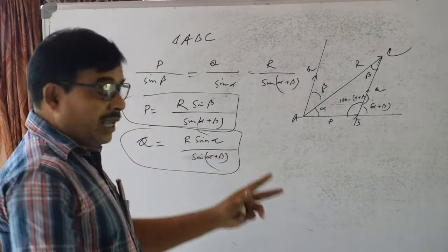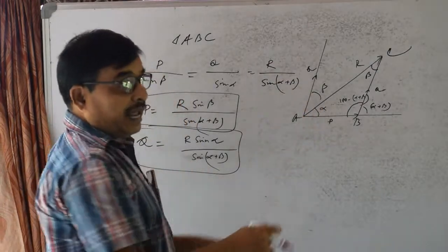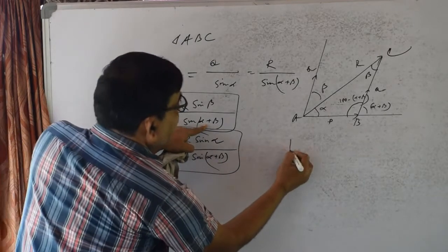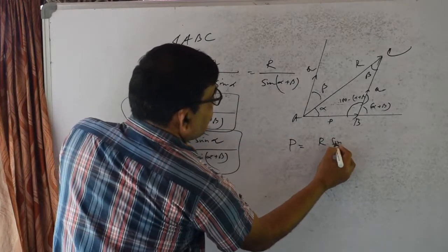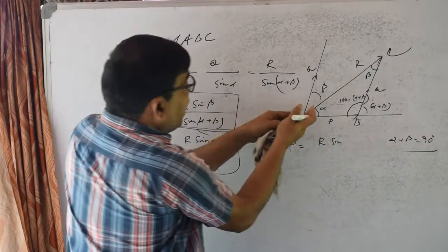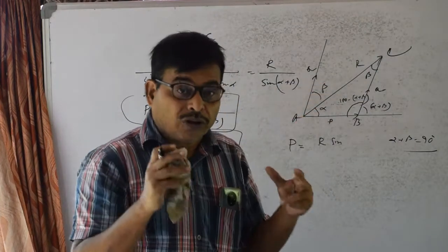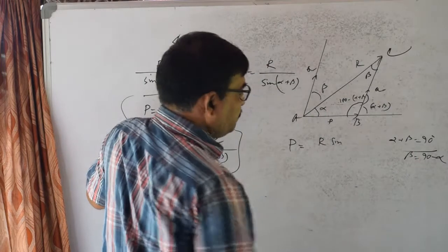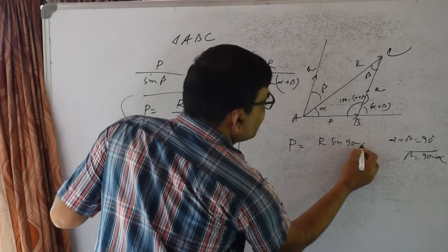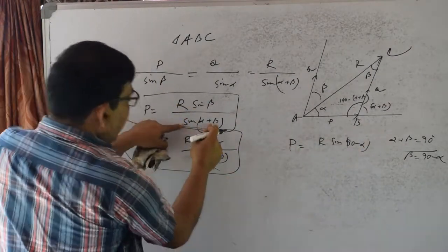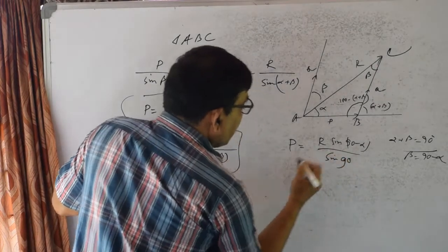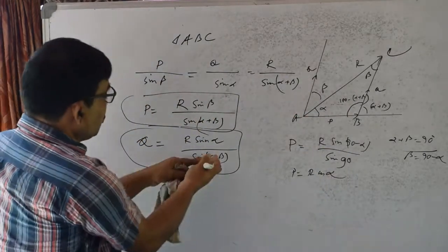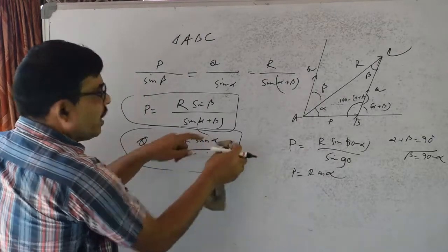If we have alpha plus beta equal to 90 degrees, then sin(alpha plus beta) becomes sin 90 equals 1. So p equals r cos alpha and q equals r sin alpha. In this special case where alpha plus beta is 90 degrees, p equals r cos alpha and q equals r sin alpha.